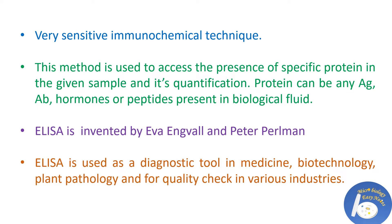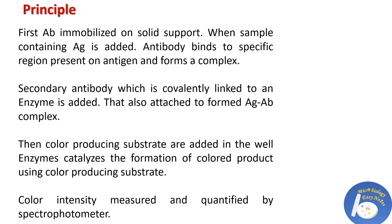That specific protein can be an antigen — a viral antigen, bacterial antigen, spores, antibody, peptides, or hormones. ELISA is invented by Eva Engvall and Peter Perlmann. ELISA is used as a diagnostic tool in medicine, biotechnology, plant pathology, and for quality checks in various industries.